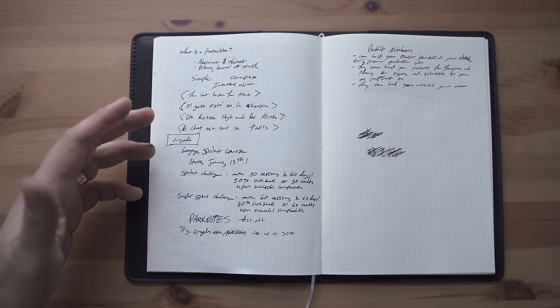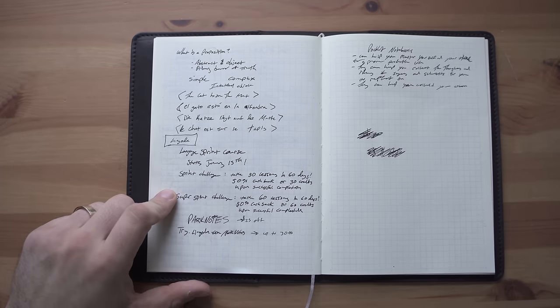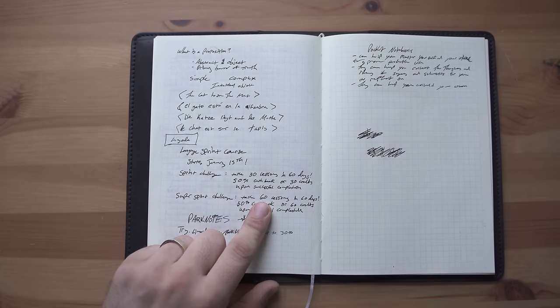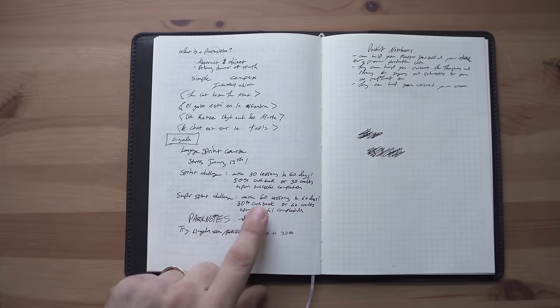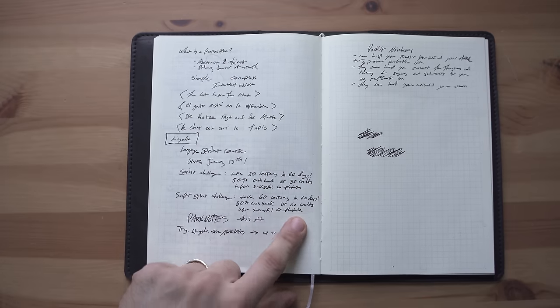Now, I know a lot of you guys are ultra learners and you're going to love that. But for the ultra super learners, there's also the super sprint challenge. In this challenge, you take 60 lessons in 60 days and you get 50% cash back or 60 credits upon successful completion.